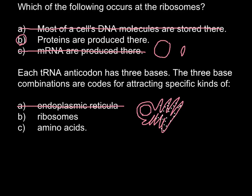We are left with B and C. Answer B: ribosomes. We can rephrase the question: does tRNA attract ribosomes? And this is exactly the opposite of what happens. So imagine this is the ribosome — it has a large and a small part.